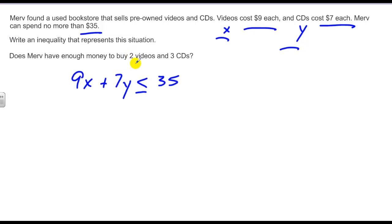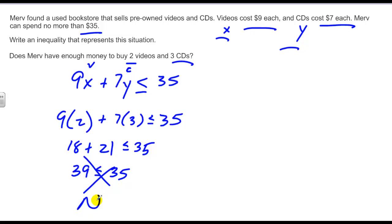And we want to know if he's got enough to buy two videos and three CDs. Well, my X is my videos, my Y is my CDs, and if I plugged in, I could certainly figure this out. Two videos are going to be 9 times 2, and three CDs are 7 times 3, and I want to know if that's less than or equal to 35. This is 18 plus 21, is that less than or equal to 35, and we know it's not, because that ends up equaling 39. So the answer to this equation is no.